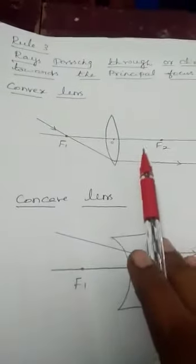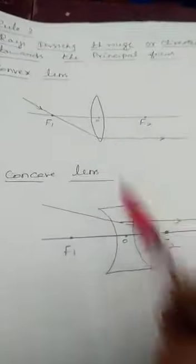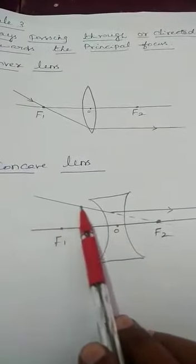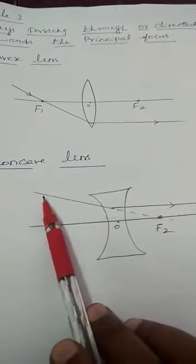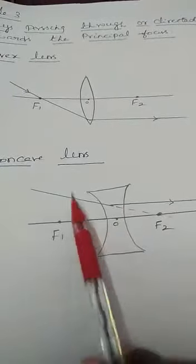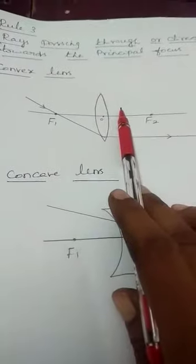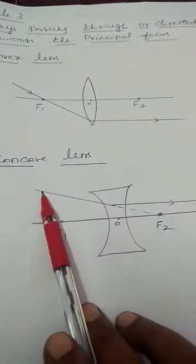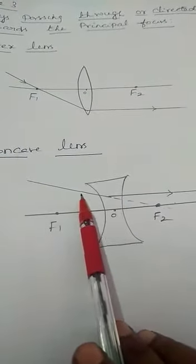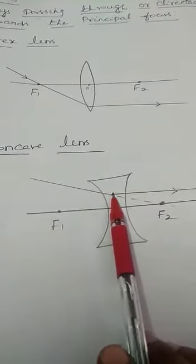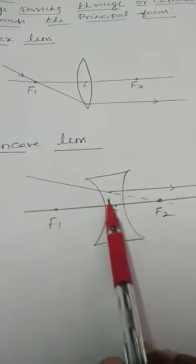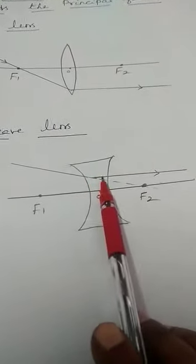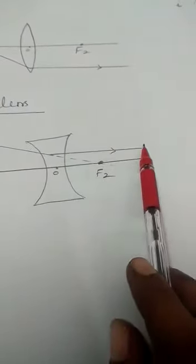For the convex lens, a ray directed towards the principal focus will emerge parallel to the principal axis. Similarly, for a concave lens, when a ray is directed towards the principal focus and strikes the concave lens, the refracted ray will also be parallel to the principal axis.